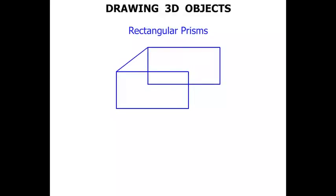Going from the corners, we draw the edges in like that. And there we have it. A pretty good looking rectangular prism.